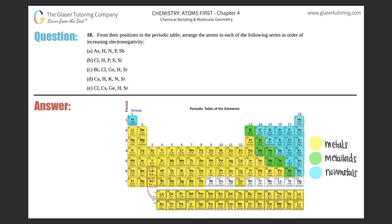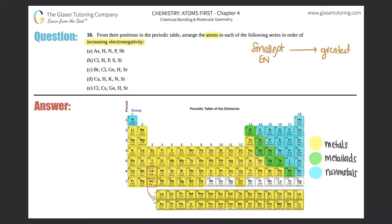Number 18. From their positions in the periodic table, arrange the atoms in each of the following series in order of increasing electronegativity. So basically we just have to rank these series in order of smallest electronegativity, smallest EN, all the way to greatest EN, or largest EN, because they want increasing electronegativity.